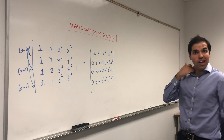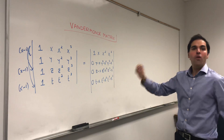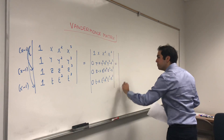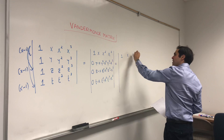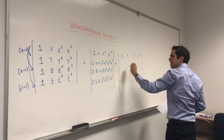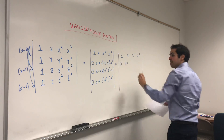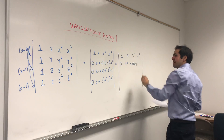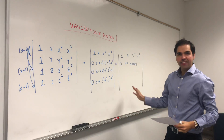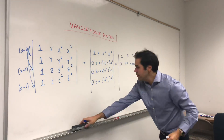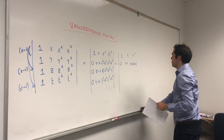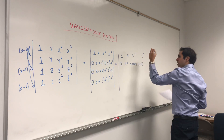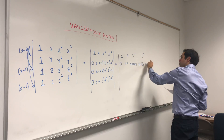Now, this looks like a lost cause, but the beautiful thing is every row will have a factor in common. Because y²−x², if you remember your algebra, it's (y−x)(y+x). And y³−x³ can also be factored as (y−x)(y²+xy+x²).